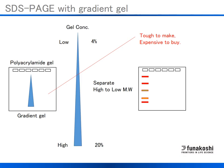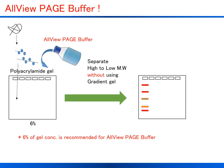However, purchasing gradient gels may be more expensive, and preparing gradient gels in a lab is difficult and time consuming. Biodynamics Laboratory has developed AllView Page Buffer. Simply replace the electrophoresis running buffer with AllView Page Buffer. AllView Page Buffer gives a wide range protein separation using a 6% single percentage gel from high to low molecular weight, nearly equivalent to using a gradient gel.